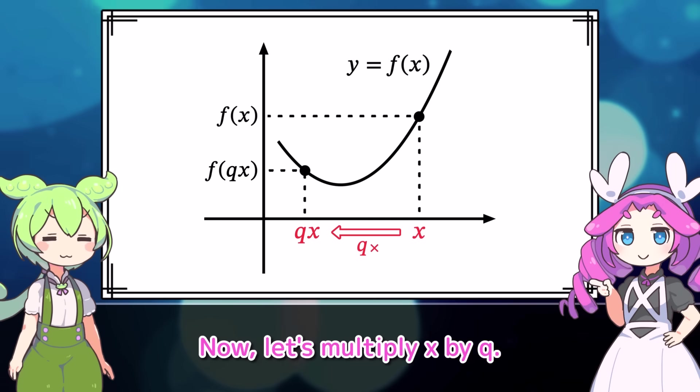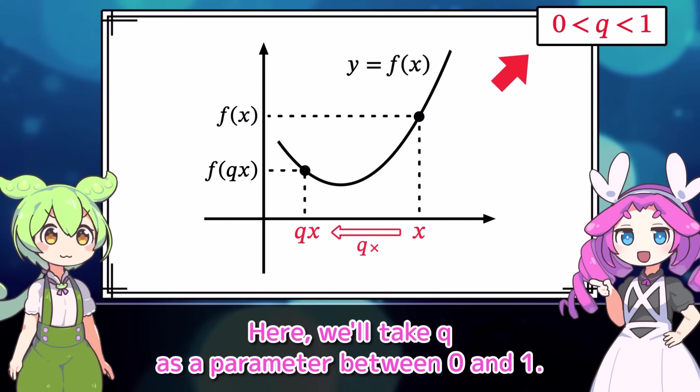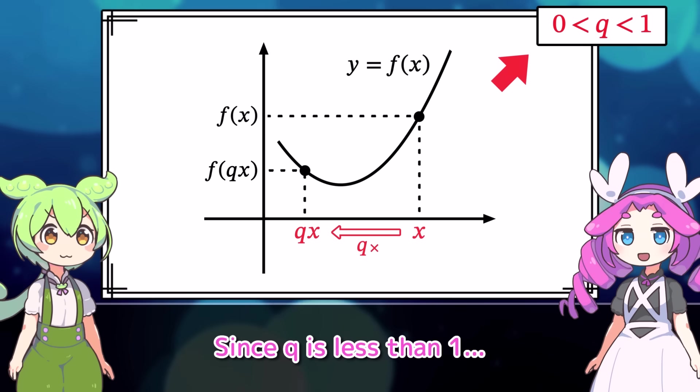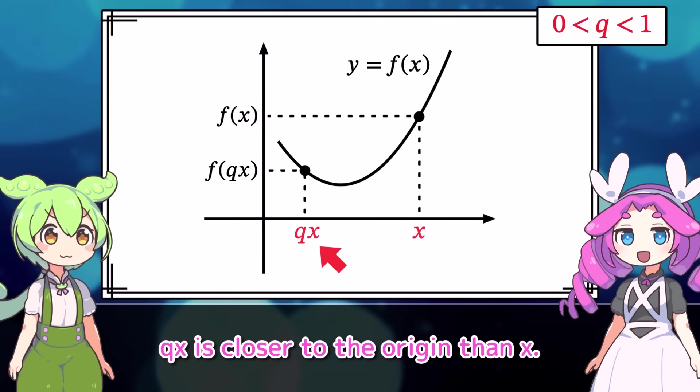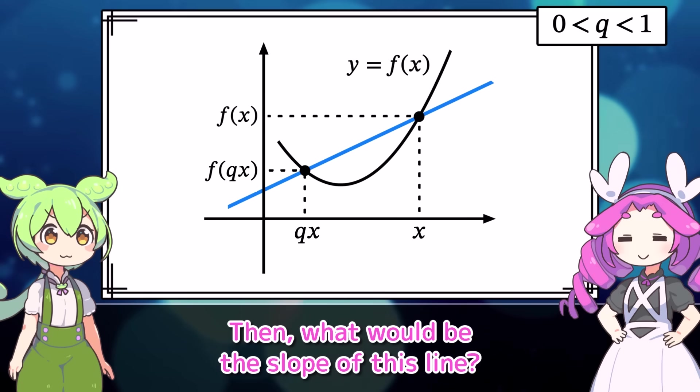Then, when the x-coordinate is x, the function takes the value f of x. Well, that makes sense. Now, let's multiply x by Q. Here, we'll take Q as a parameter between 0 and 1.